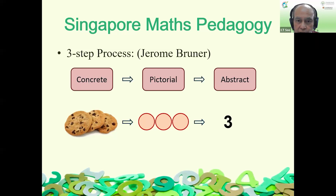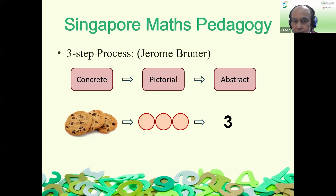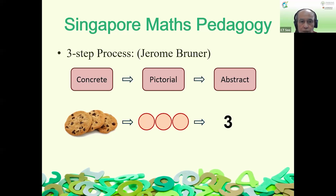So children learn through this Concrete, Pictorial, Abstract - CPA - process. In primary Maths we design very much with this in mind, especially as we move from grade to grade. For example, using Unifix cubes - a common manipulative used in kindergarten or grade one - five pieces joined together represent five. If you ask a child to put them into two groups, they break it into two and three. That's the concrete stage.